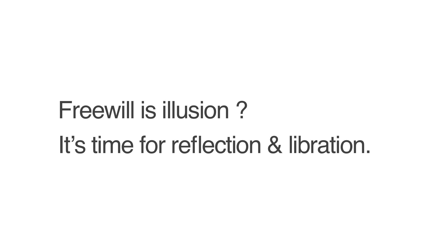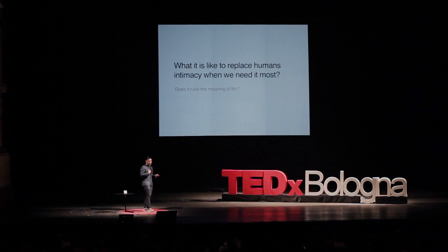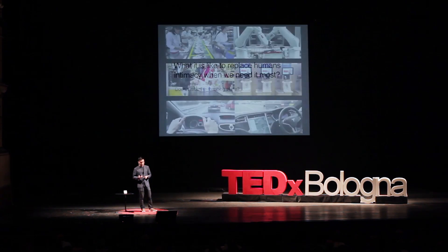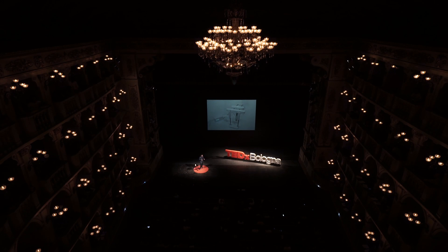But I would say it's a great time for reflection and liberation. To help with that, I came up with a few questions to explore this post-human era. The first is: what is it like to replace human intimacy when we need it the most? The idea came from observing how industry is transforming from human-based labor to automation — factory workers replaced by robotic arms, retail replaced by self-checkout machines, cars replaced by self-driving cars like Tesla. And then I thought, why not replace nursing? Or care for people who can't be with their loved ones when they pass away.